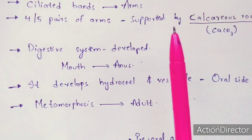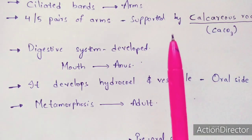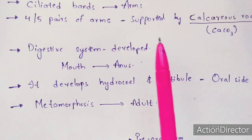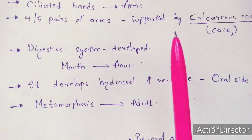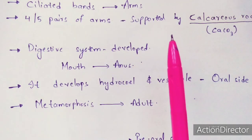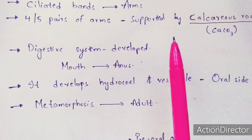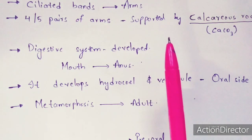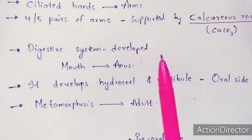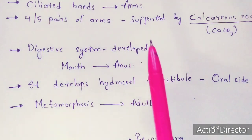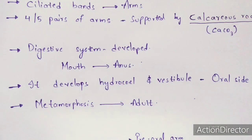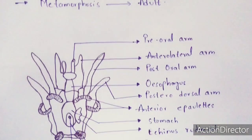Metamorphosis can also be seen in insects like butterflies. I have explained metamorphosis in a previous video in the context of insects, so you can get a basic idea from there. A link will be given in the description box. So the echinopluteus larva undergoes metamorphosis and becomes adult. Now let us see the diagram of the echinopluteus larva.